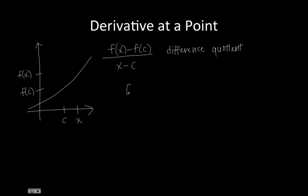The derivative, which is written as f prime of C, is equal to the limit as x approaches C for the function f of x minus f of C over x minus C. So the limit as x approaches